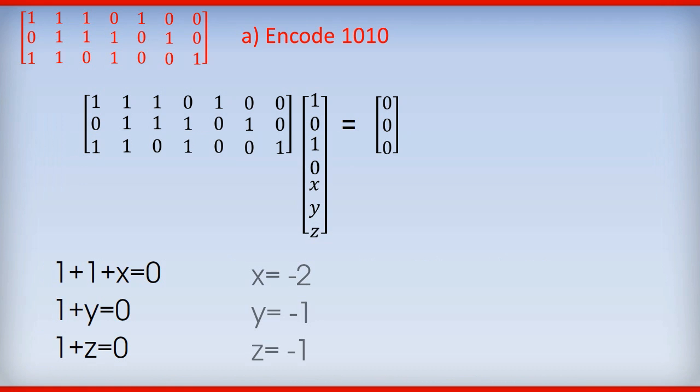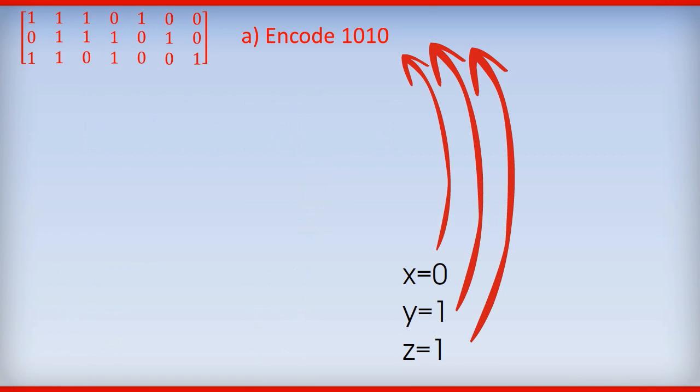So that means that X equals minus 2, Y equals minus 1, Z equals minus 1. And remember, odd numbers are 1 and even numbers are 0. So X equals 0, Y equals 1, Z equals 1. And we now just add those three check digits onto the 1, 0, 1, 0. And we have our answer.